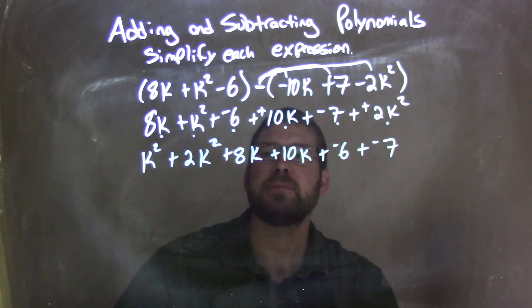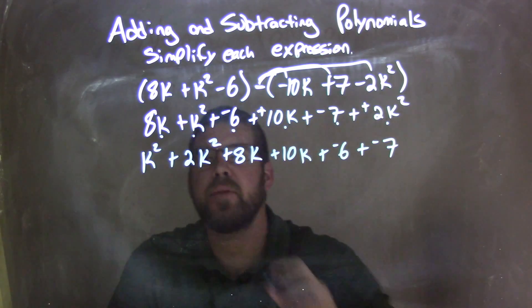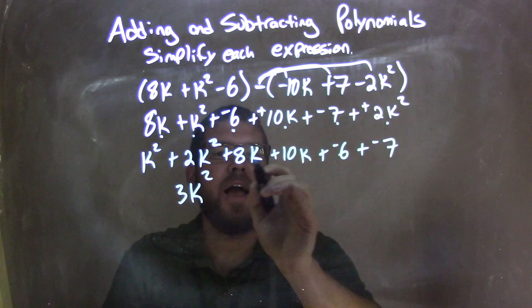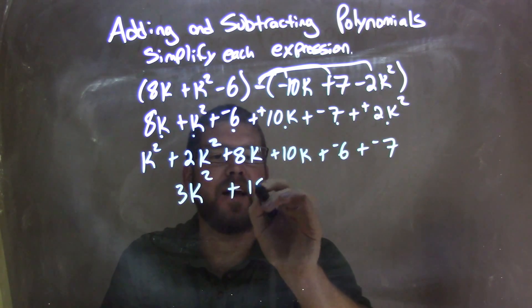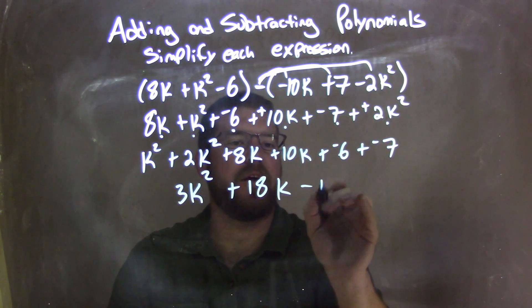Fantastic, they're next to each other. So now let's simplify and combine them. k squared plus 2k squared is 3k squared. 8k plus 10k is 18k. And negative 6 plus a negative 7 is negative 13.